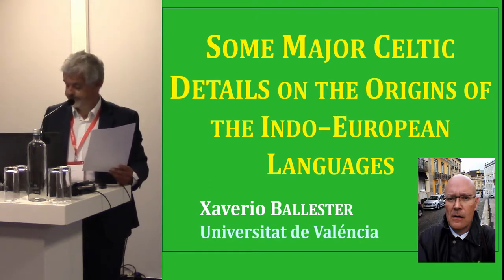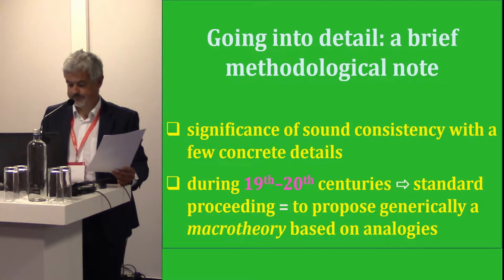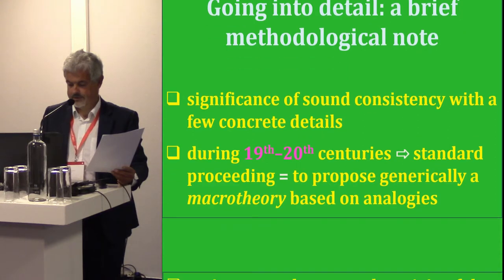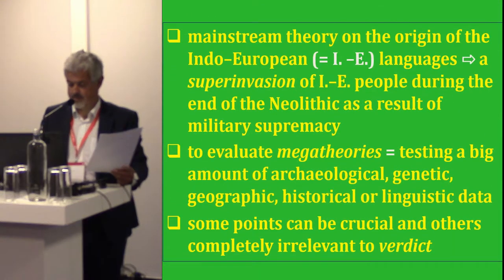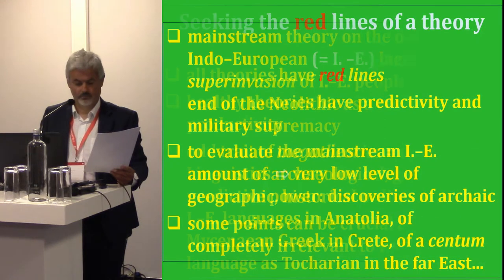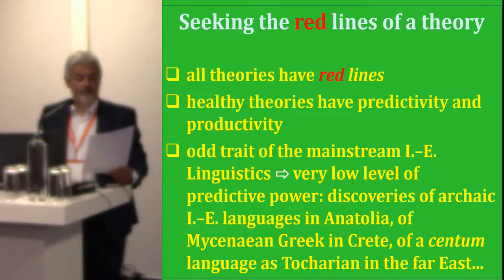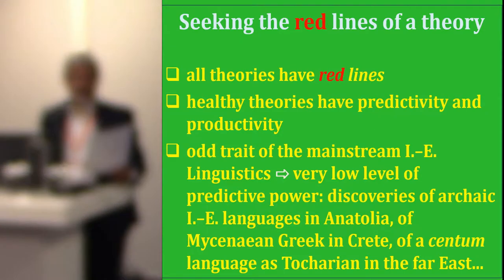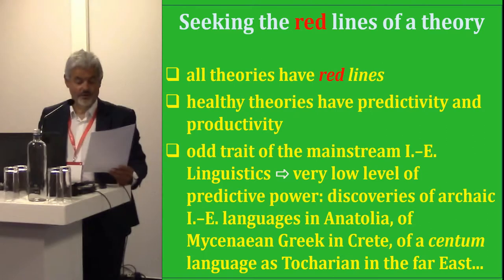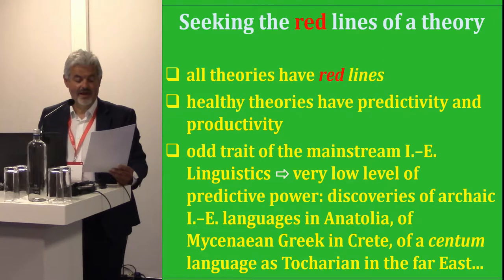Seeking the red lines of the theory. Fortunately, all theories have their own red lines or red lights — limits that you cannot cross. If one does, it means that the theory is not well-founded. On the other hand, healthy theories have two concomitant qualities: predictivity and productivity.